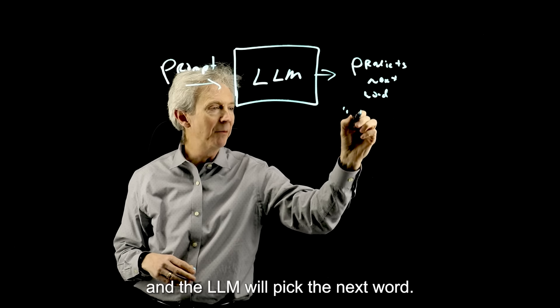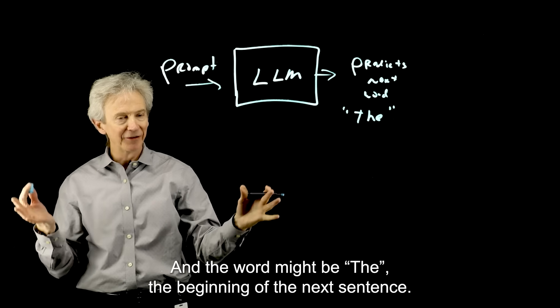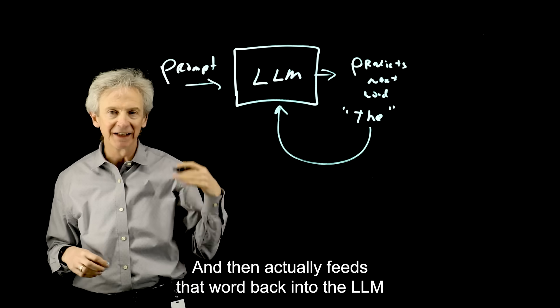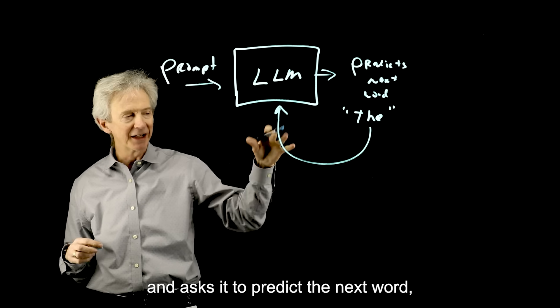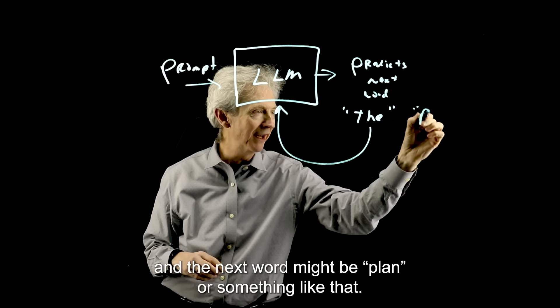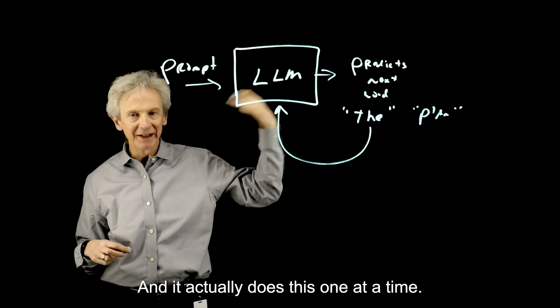So you pack the prompt in there. You send it to the LLM. And the LLM will pick the next word. And the word might be 'the', the beginning of the next sentence. And then it actually feeds that word back into the LLM and asks it to predict the next word. And the next word might be 'plan' or something like that. And it actually does this one at a time.